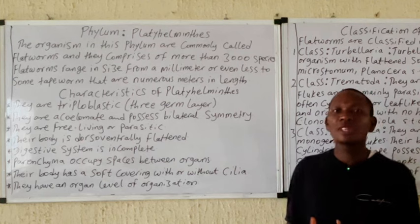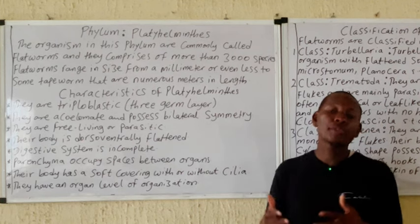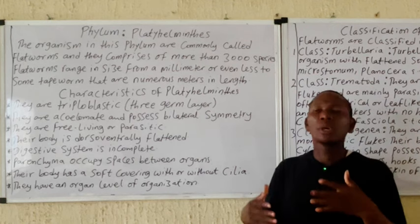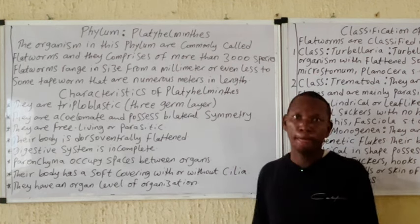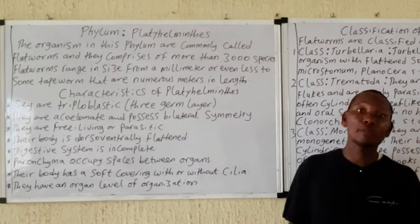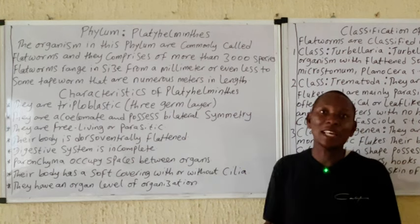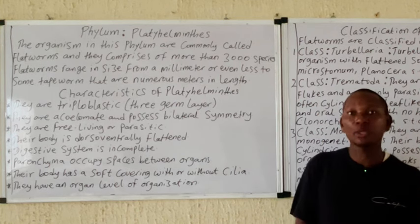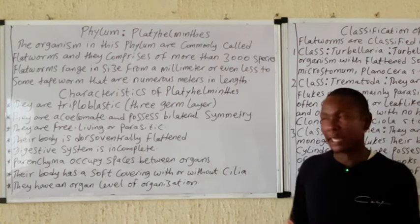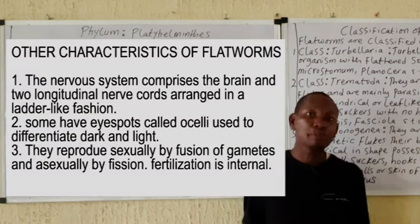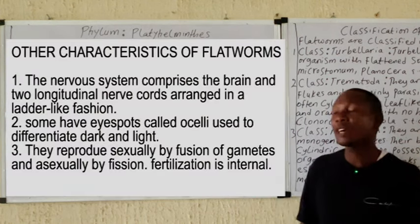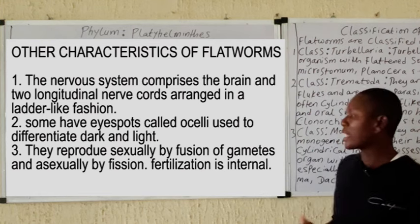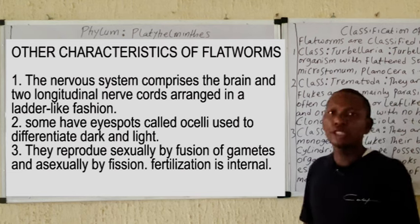They can reproduce sexually, usually through the fusion of gametes, while they can reproduce asexually through fission. As mentioned earlier, if a particular segment is cut off, it can grow back, which implies that they possess high regenerative ability. Other characteristics of Platyhelminthes are highlighted on the board.